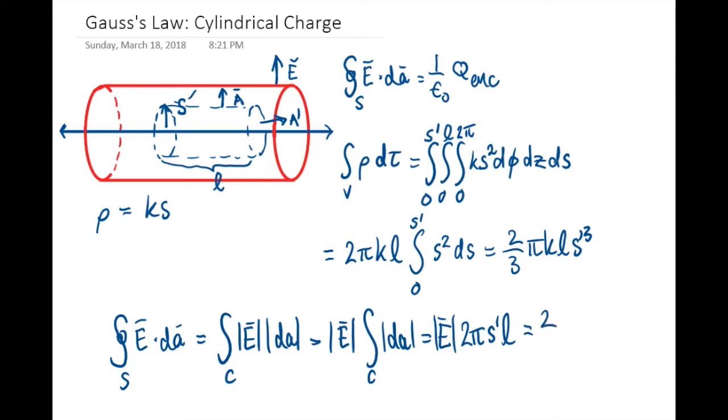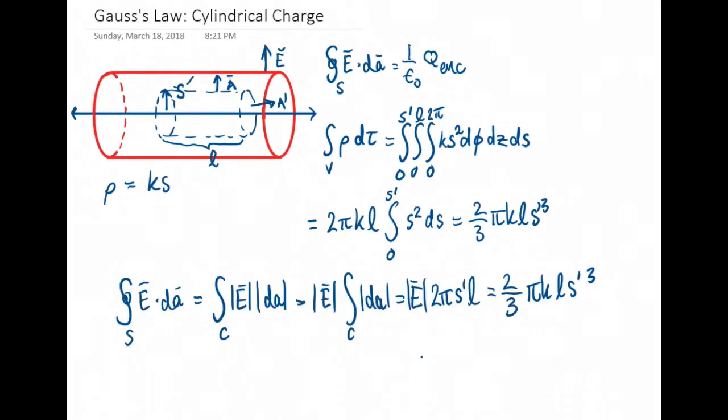So that equals two-thirds π k l s prime cubed, and we can solve for the electric field strength. If we cancel the π, the l, and one of the s primes, and the 2—I forgot the ε₀ over here. So our electric field strength will be k s prime squared over 3ε₀ in the radial direction.